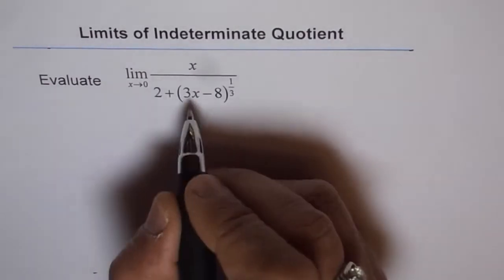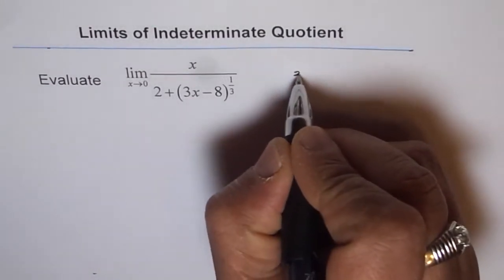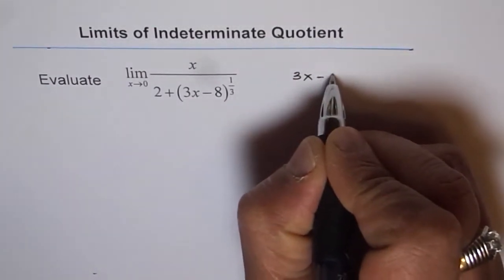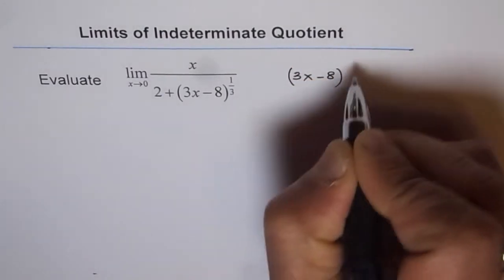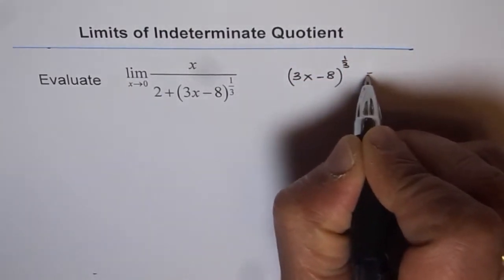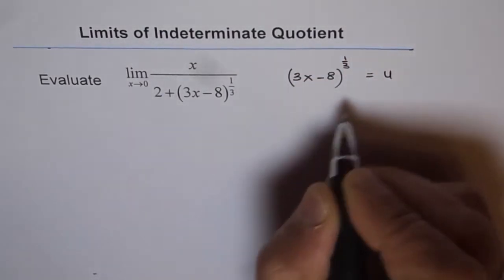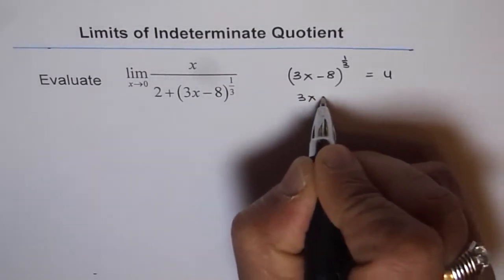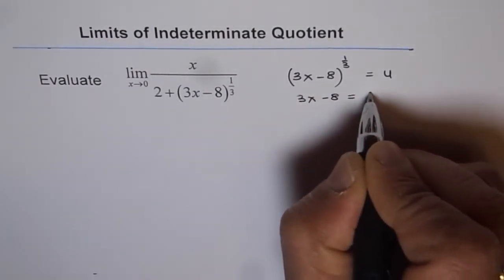So let's substitute 3x minus 8 to the power of 1 over 3 as u. In that case, 3x minus 8 will be equals to u cube.